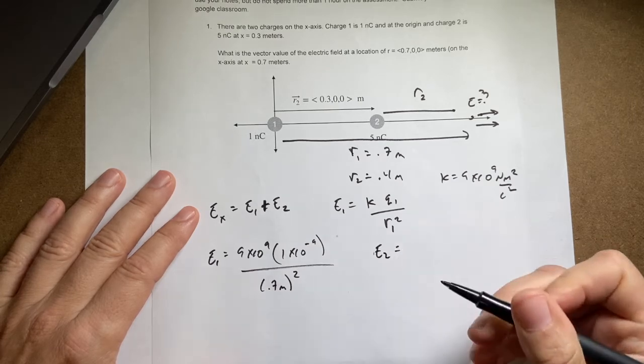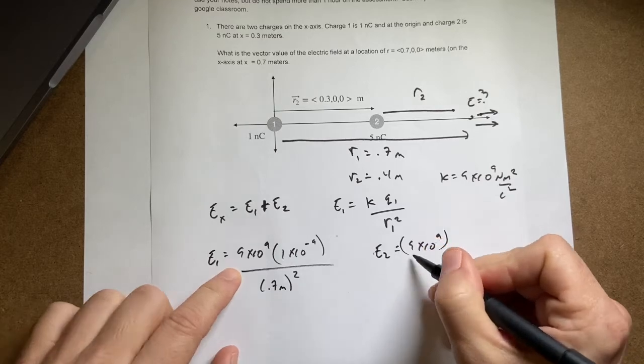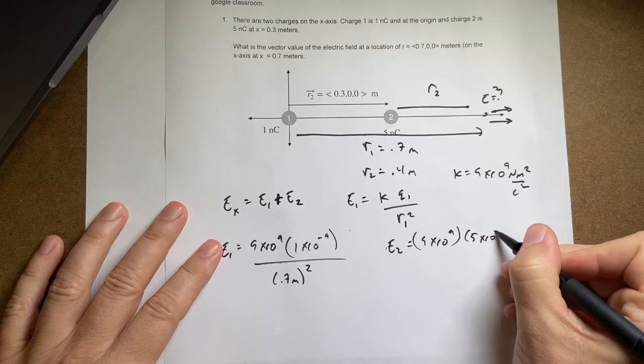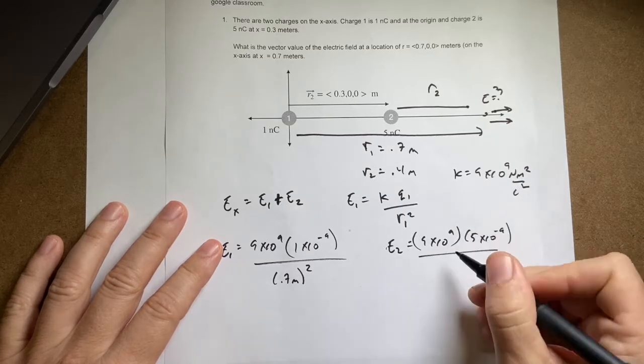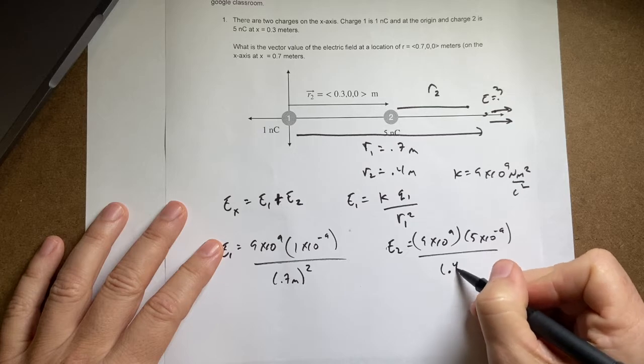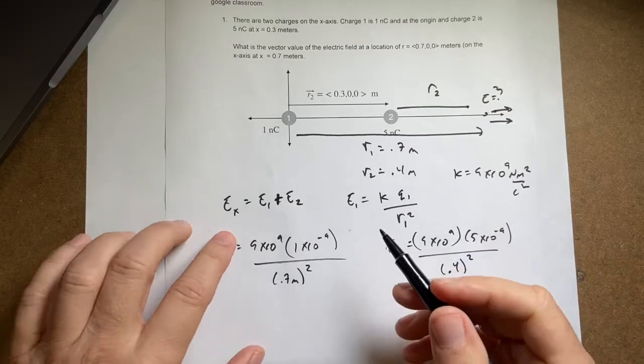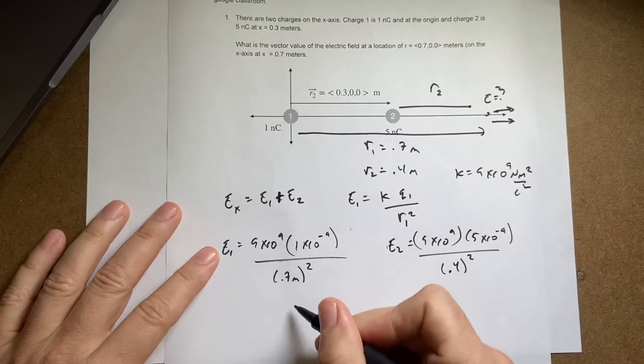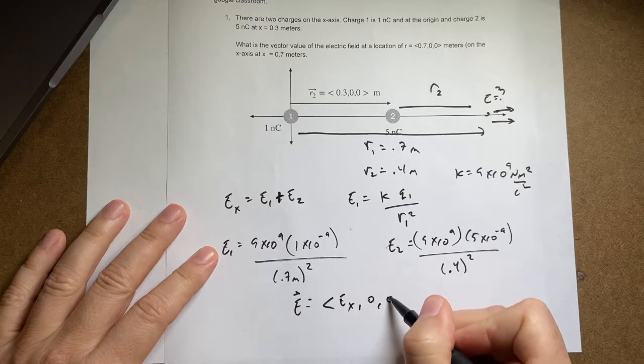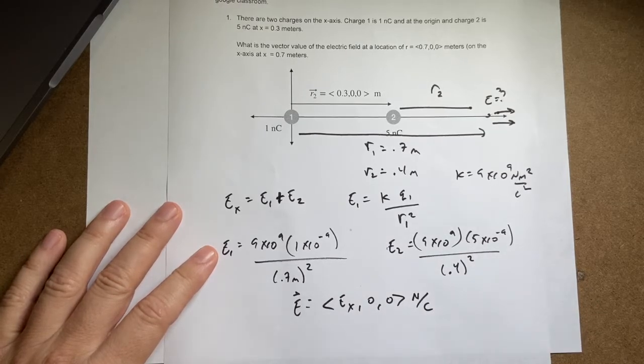E2 is going to be equal to the same thing. 9 times 10 to the 9th times the charge of 5 times 10 to the negative 9th over the distance squared which would be 0.4 squared. Now I left off the units. And then the total E is just add these two together. Then, as a vector, E would be the vector EX 0, 0 newtons per coulomb. And I'm going to find that. I'm going to do it in Python.